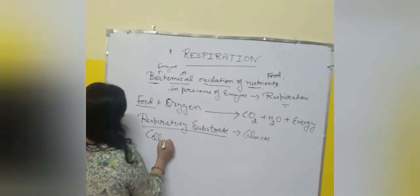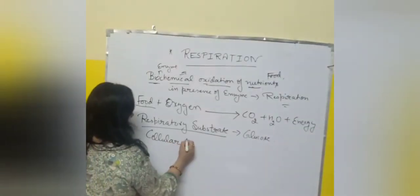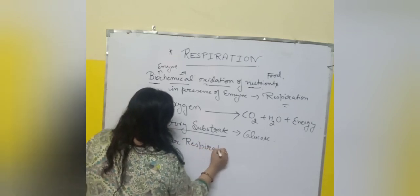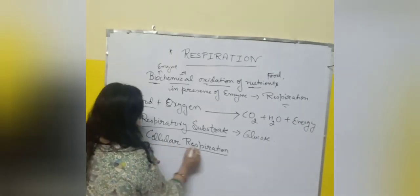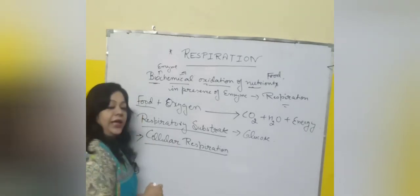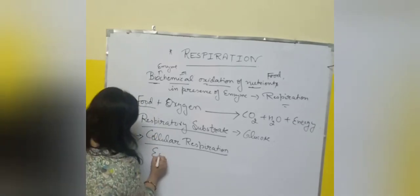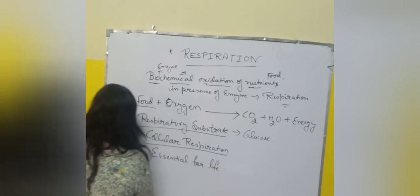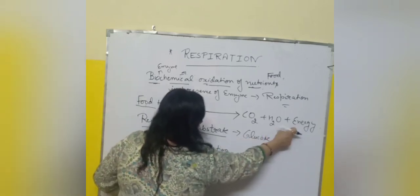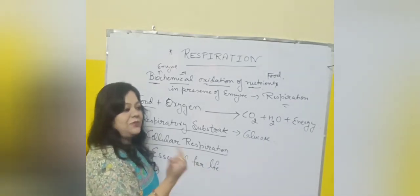Cellular respiration: the respiration taking place inside the human body is known as cellular respiration, because each and every cell undergoes the process of respiration. That is why it is known as cellular respiration — the respiration taking place inside the cell. It is very essential for life because during respiration, a large amount of energy is released and that energy is utilized to perform various activities which keep us alive.